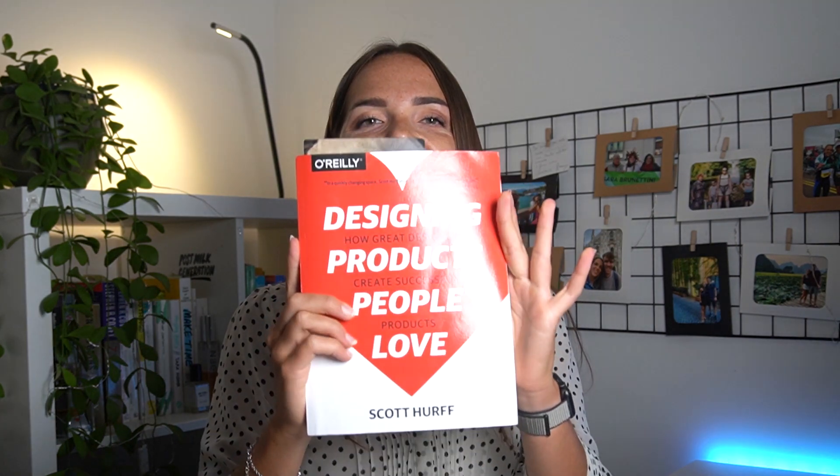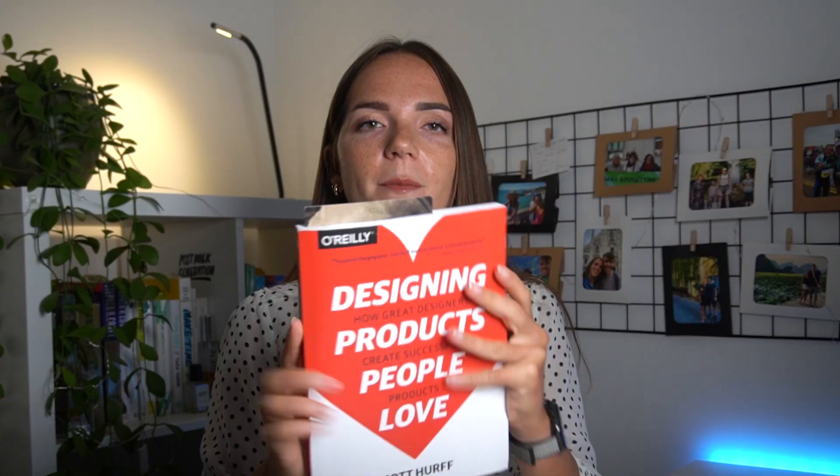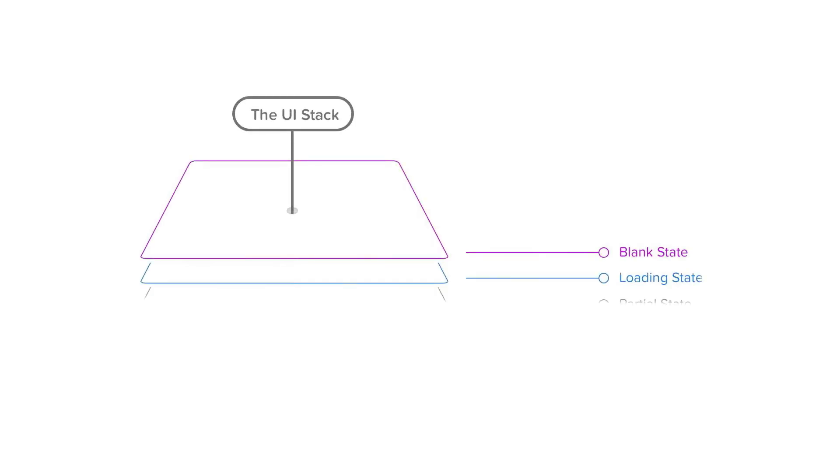Today I thought it would be really interesting to discuss a topic from this book — it's called Designing Products People Love by Scott Earth. I love this book because it's full of insights I use at work all the time. The book describes the UI stack as five states of a single screen: one screen, five versions. So how does it work?